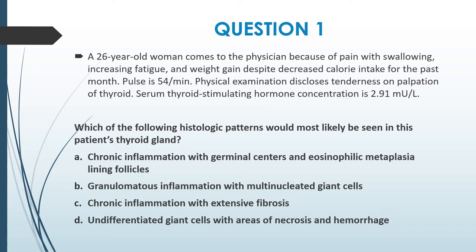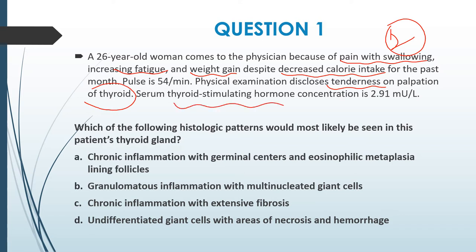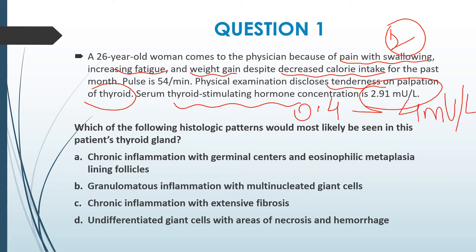Physical examination discloses tenderness on palpation of the thyroid. Serum TSH concentration is 2.91 mU/L. In this case, the patient has pain with swallowing, fatigue, weight gain despite decreased appetite, and tenderness on palpation of the thyroid. The TSH is within normal range (0.4–4 mU/L). The symptoms point to hypothyroidism.